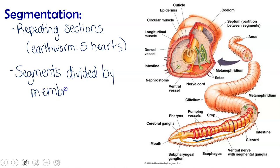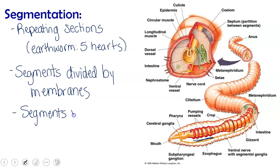This is different from a human. Humans do not have these membranes or septa inside their bodies. If they did, our whole chest cavity would be filled with membranes between each of our ribs and each of our vertebrae. For our annelids, the segments are typically visible on the outside, externally.